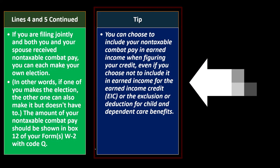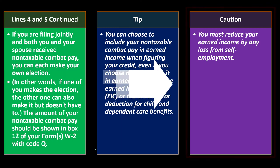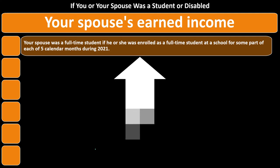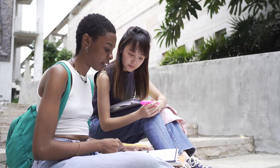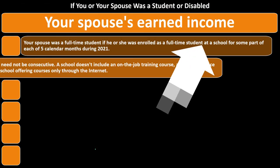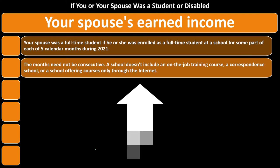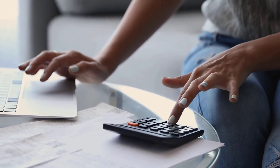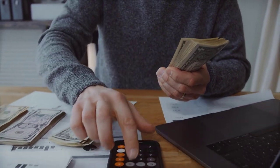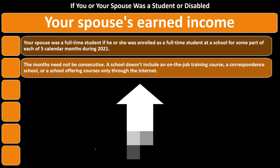Combat pay doesn't help you where it's included as general income for income tax calculations. Caution: you must reduce your earned income by any loss from self-employment. Special rules apply if you or your spouse was a student or disabled — if your spouse was a full-time student enrolled for at least part of each of five calendar months during 2021, you may still qualify for the credit even without earned income.